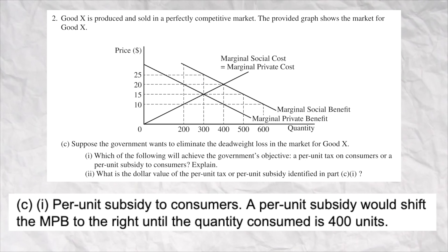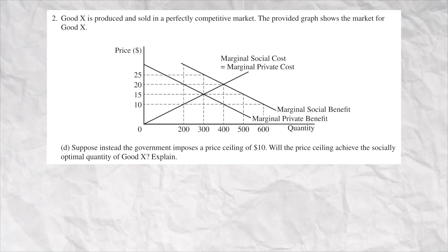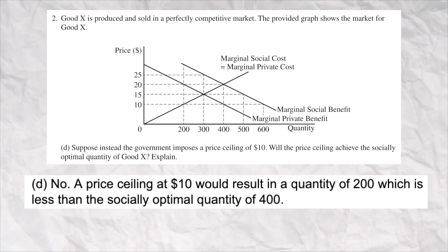In part C, they ask you about fixing the externality. The solution is a per-unit subsidy, and you also had to explain that a per-unit subsidy would shift the marginal private benefit to the right, and the new quantity of 400 would be produced, which is socially optimal. The dollar value of that subsidy is the vertical distance between the benefit curves — from 25 down to 15, or from 20 down to 10, so the vertical distance is 10. Part D is probably the trickiest question. Putting a price ceiling at $10 does not reduce deadweight loss — it doesn't result in the socially optimal quantity. A price ceiling is a cap on prices, so prices stop at $10. The quantity produced would be 200, firms would have no incentive to produce more, and that would make deadweight loss bigger.